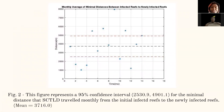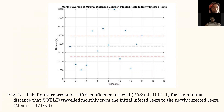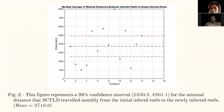The second graph represents a 95 percent confidence interval for the minimal distance that SCTLD traveled monthly from the initial infected site to newly infected sites. The average distance was 3,716 meters. The 95 percent confidence interval was between 2,530.9 and 4,901.1 meters, and we are 95 percent confident that the rate the disease traveled monthly falls between the two red lines on the graph.